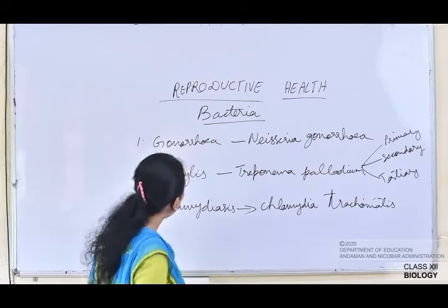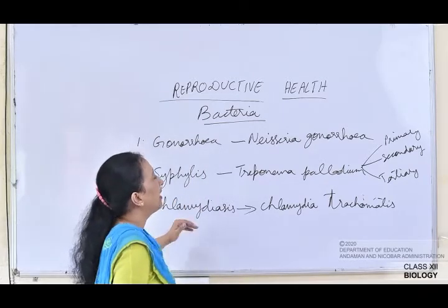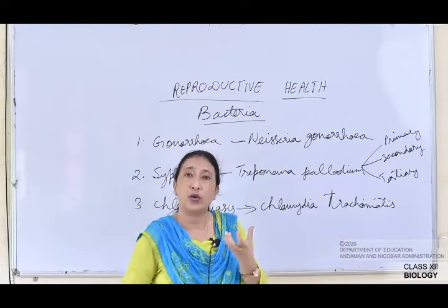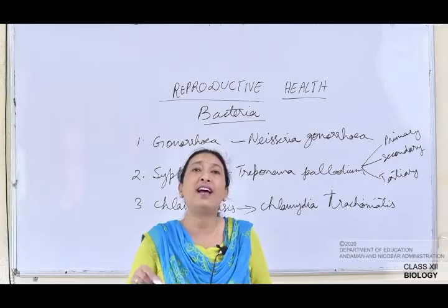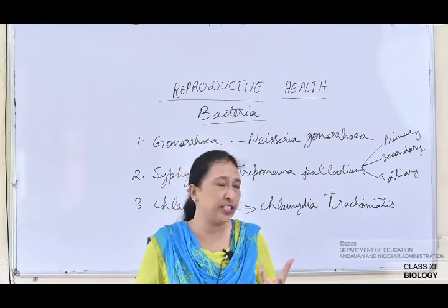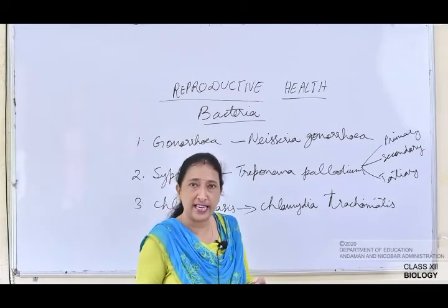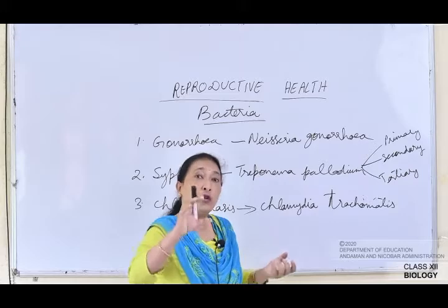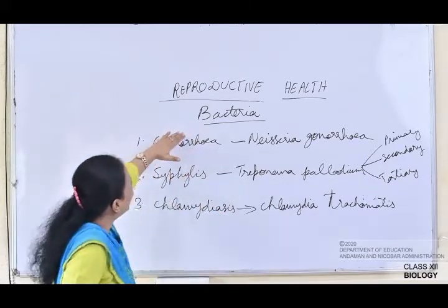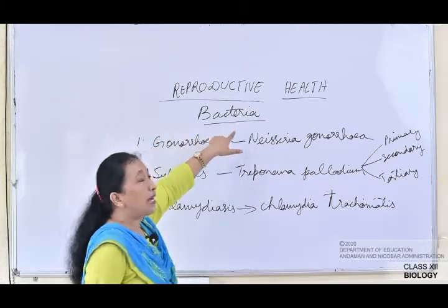The third bacterial disease is chlamydiasis, caused by the bacteria Chlamydia trachomatis. It is formed in the epithelial cells of the urogenital tract. Again, there will be itching sensation, discharge, and swelling of the groin nodes.